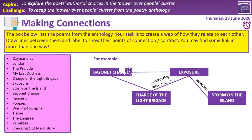The next task is to link together poems in the anthology in as many ways as possible. On the left in the pink box we have the 15 poems in the power and conflict anthology. You're going to create a web on your page linking them together — there's no right order, it's entirely up to you. Start with the poem you're most confident with. For me that might be Exposure, which connects to nature, war, identity, the group, the individual, and memory.